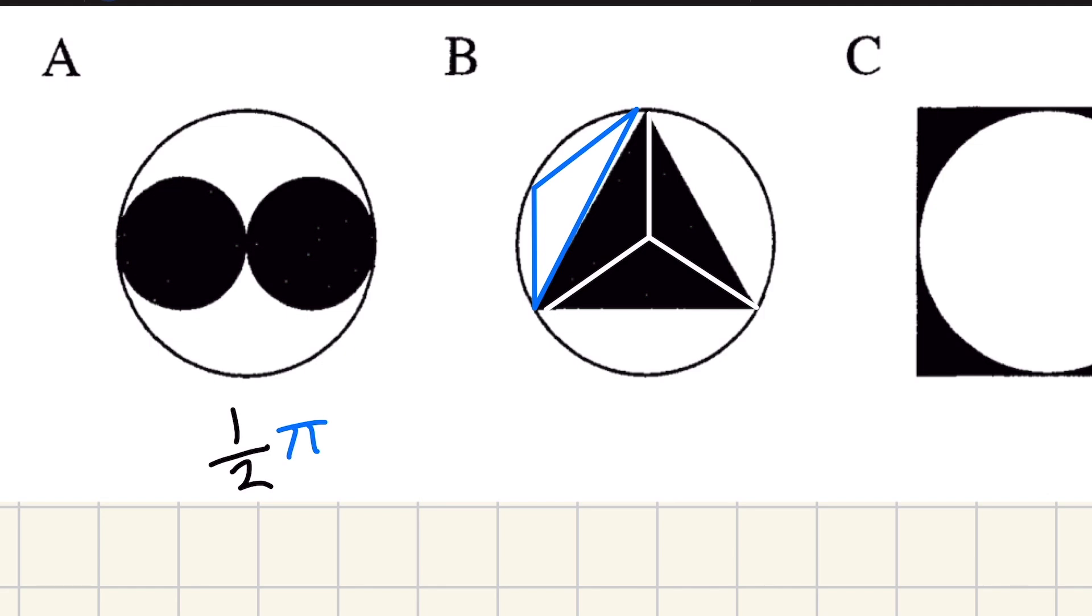Now you can see that these two triangles are the same and there is still some missing space here and missing space here. So this black area has to be smaller than half. Half of it and there's three of it. So we know that B is just completely out of the question.